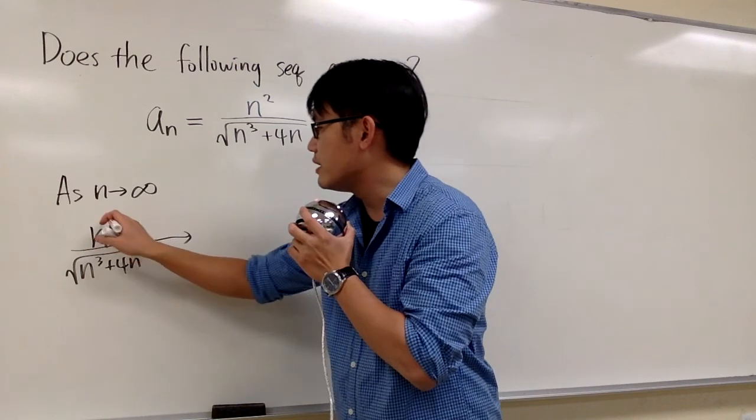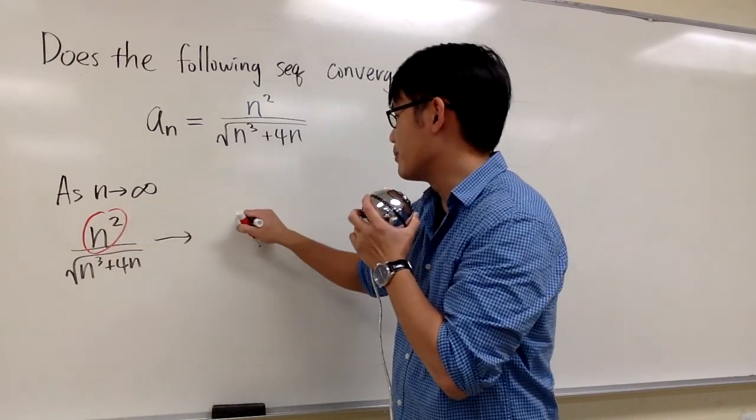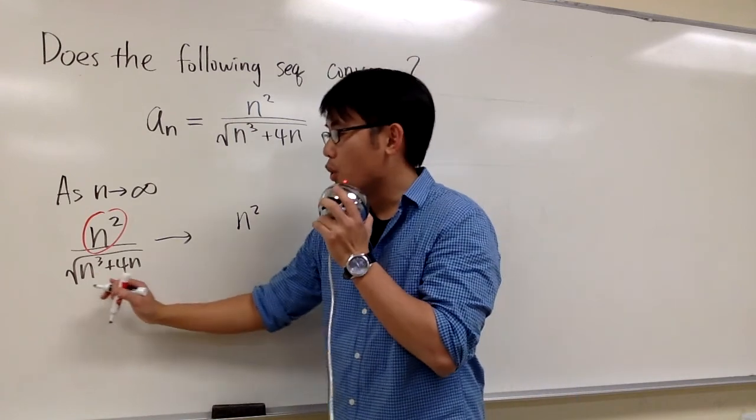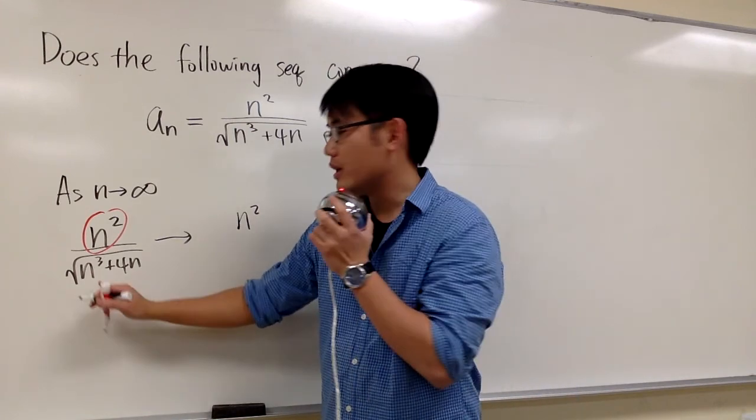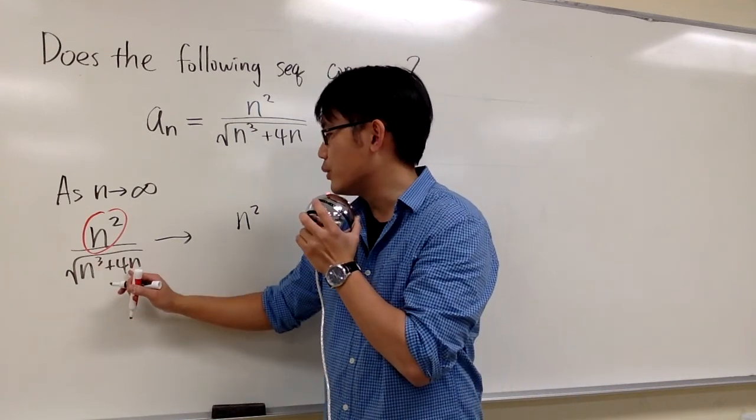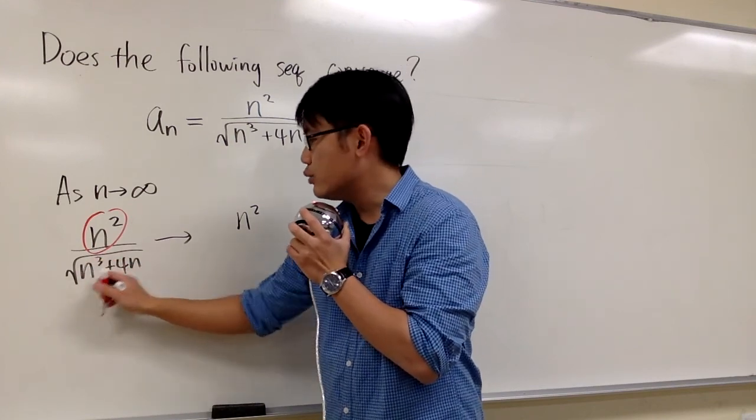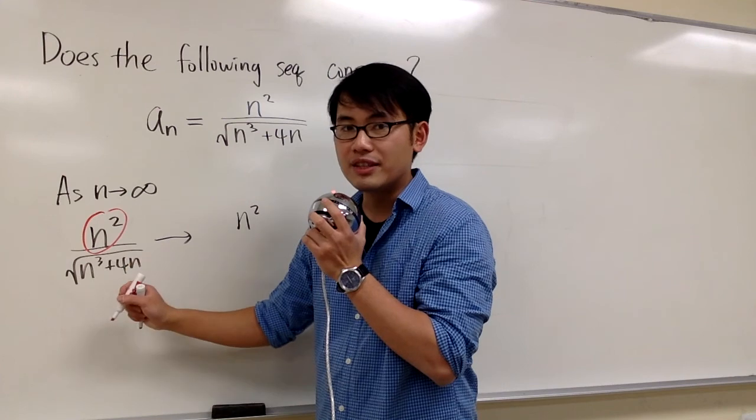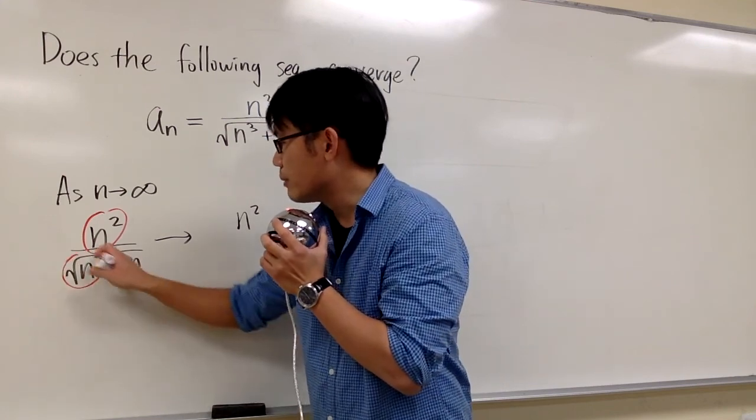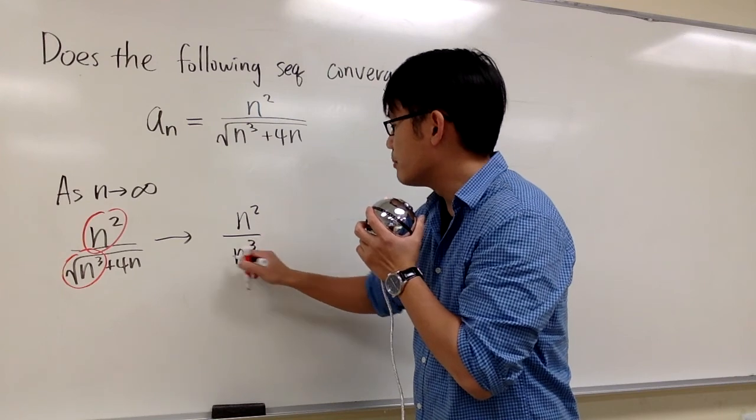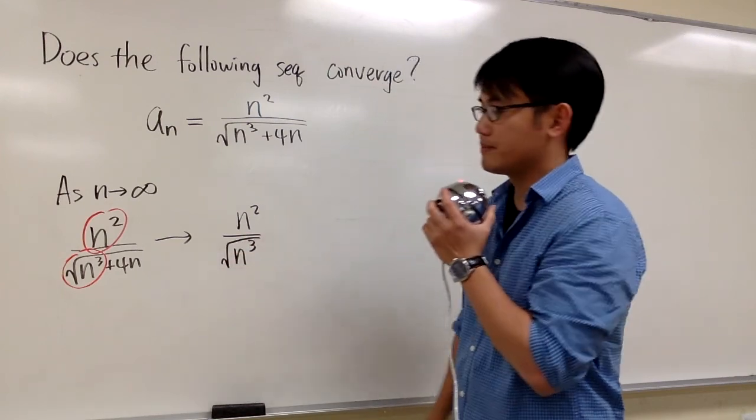Now, because n approaches infinity, on the numerator, that's just n². But on the denominator, we pay attention to the higher power. Here we have n³, and here we have 4n¹. So the n³ will matter, but it's inside the square root. Pay attention to both things: we do have n³, but it's in the square root.